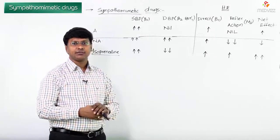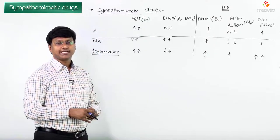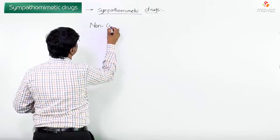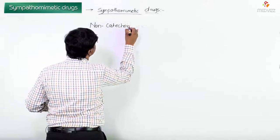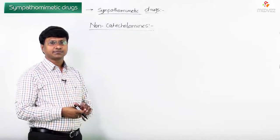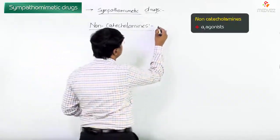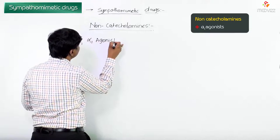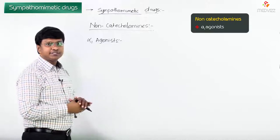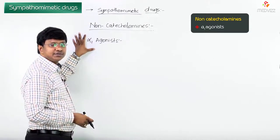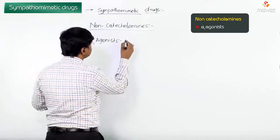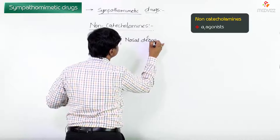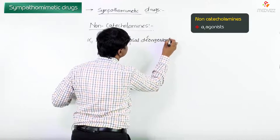Now let me discuss the non-catecholamines. They act on alpha-1 receptors, and we have a group called alpha-1 agonists. The examples of these alpha-1 agonists are used as nasal decongestants: naphazoline, oxymetazoline, and xylometazoline — they act on alpha-1 receptors and are used as nasal decongestants.